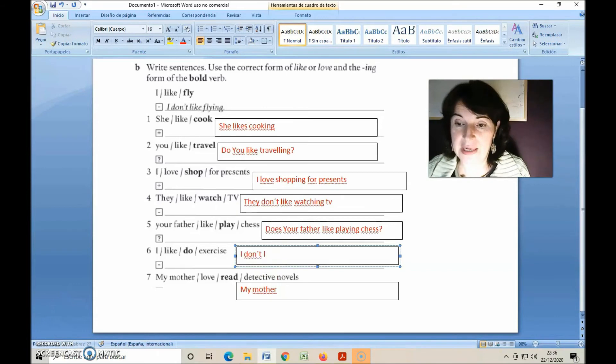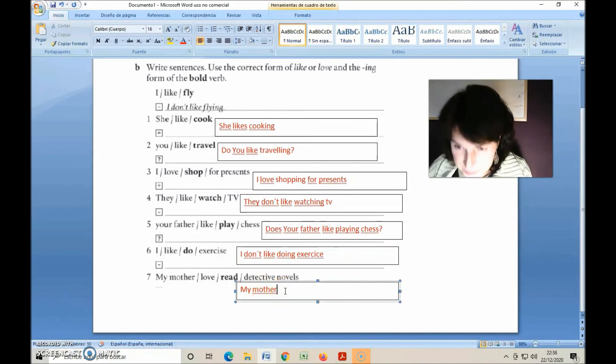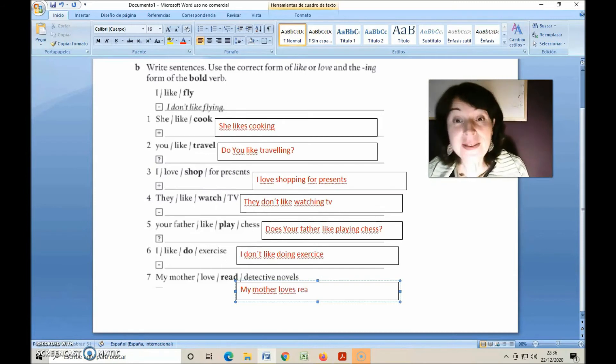This is a negative sentence. I don't like, also with the auxiliary for I, don't like doing exercise. And here, well, let's say it's affirmative. My mother, it's like she, so it's third person, we add an S, loves reading detective novels. This is how we do this kind of exercises.